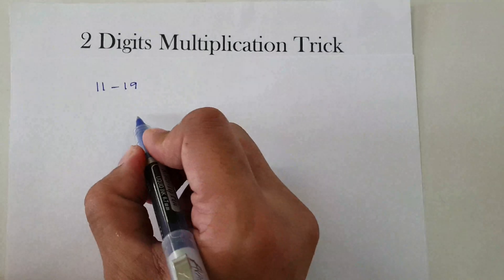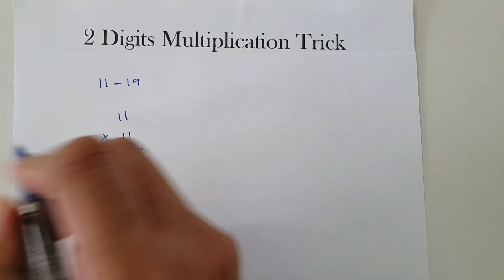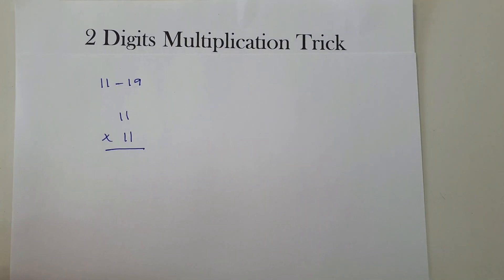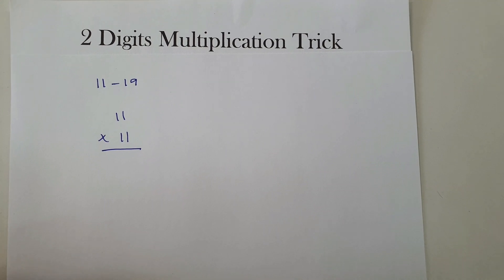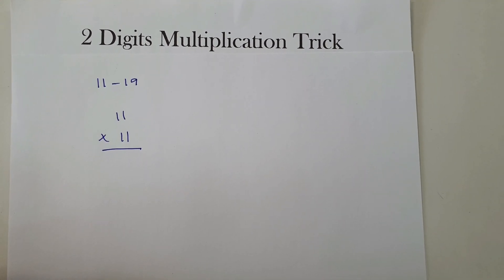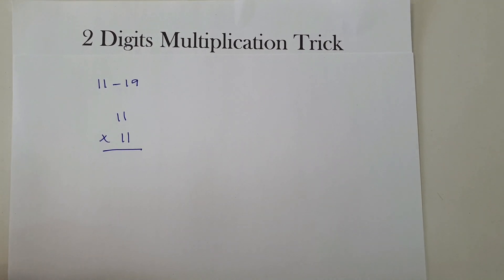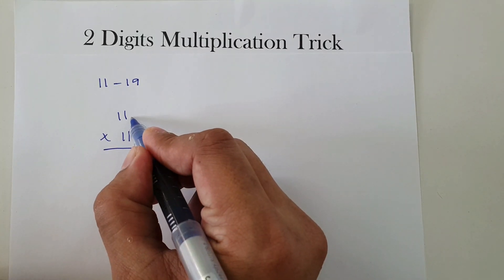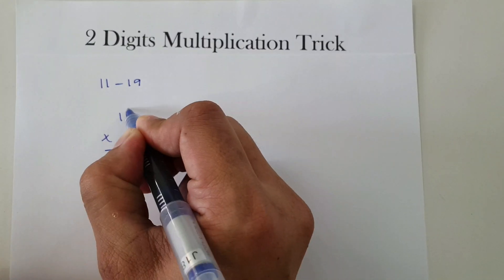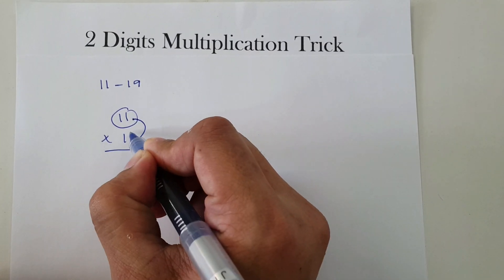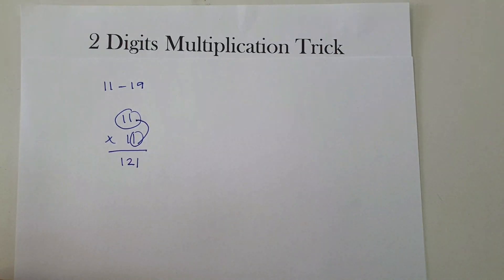For example, we have 11 times 11. If you are going to multiply 11 times 11, the result is 121. But how do we apply the trick? First, 1 times 1 is 1, and then 11 plus 1 is 12. So the result is 121.